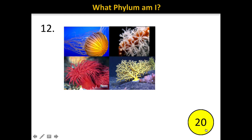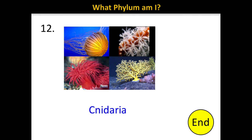Number 12. The correct answer is Cnidaria. Here we have representatives of the phylum Cnidaria: in the top left we have a jellyfish, on the bottom left an anemone, and on the right side pictures of coral. So coral, anemones, and jellyfish are examples of Cnidaria.